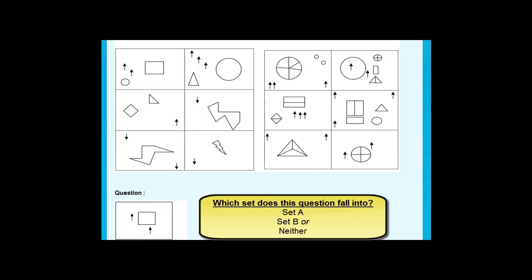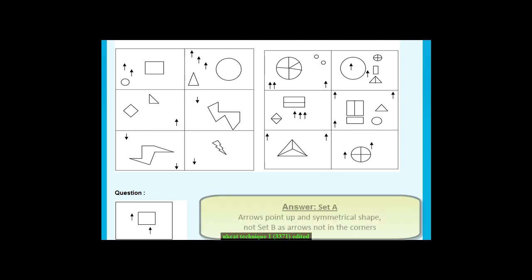Which set does this question fall into? The answer is set A. The arrows point up and the shape is symmetrical. It does not fall into set B as the arrows are not in the corners.